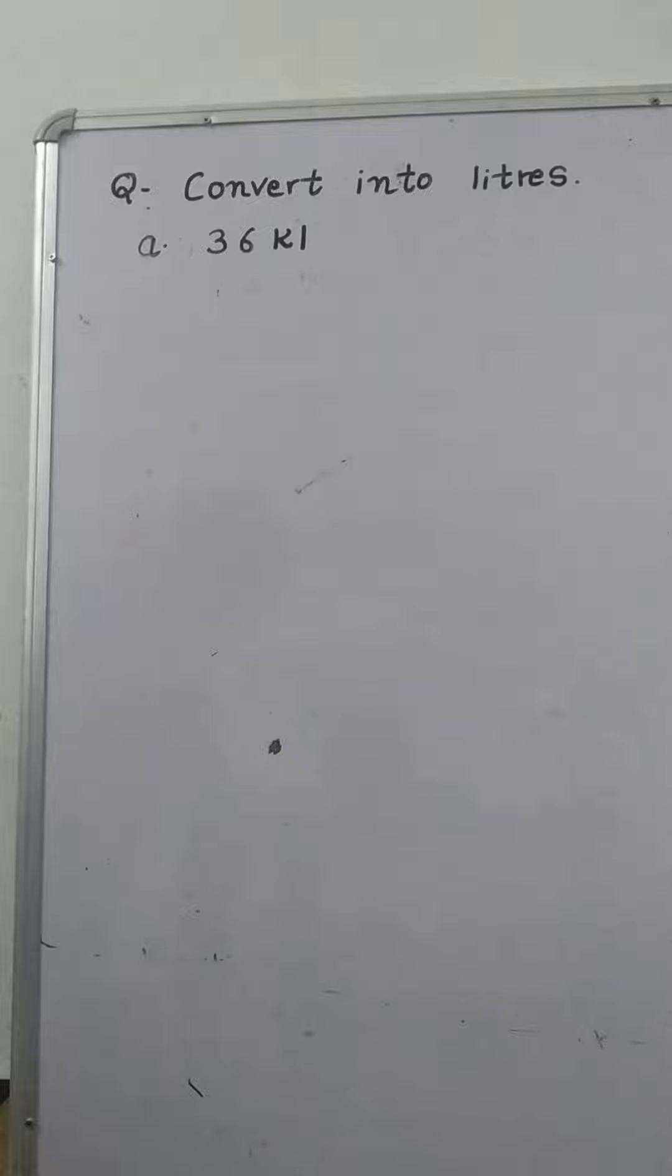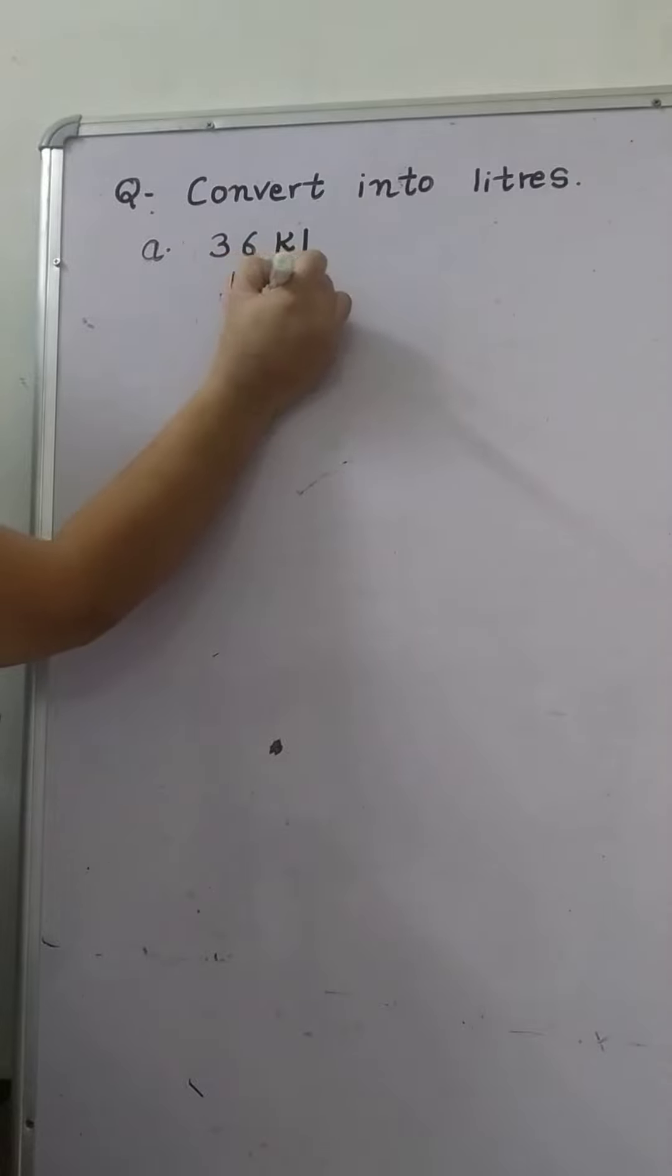Convert into liters. 36 kiloliters are given. We will convert in liter. As we know, 1 kiloliter is equal to 1000 liter.